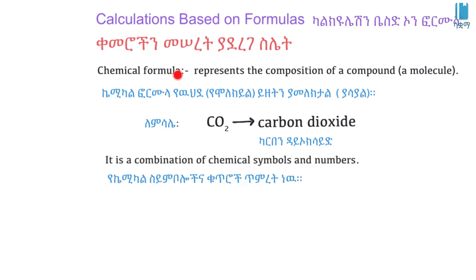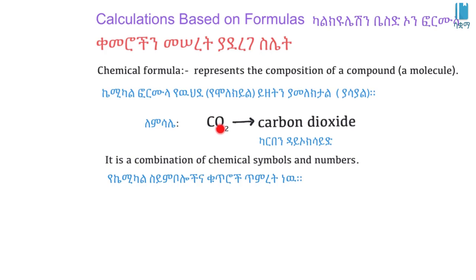A chemical formula is a combination of chemical symbols and numbers. The symbol represents an element, and the number indicates how many atoms of that element are present. For example, in carbon dioxide, the oxygen symbol has a subscript number indicating the number of oxygen atoms.